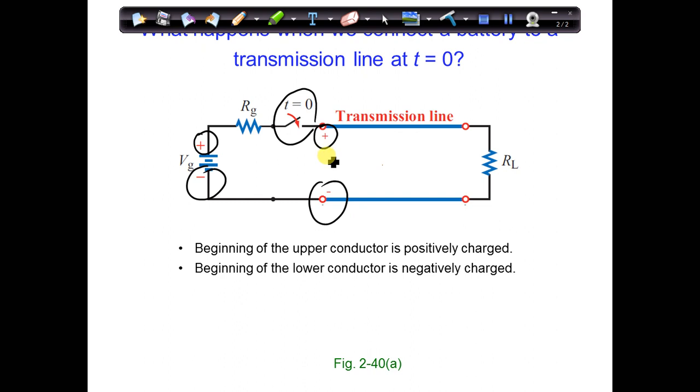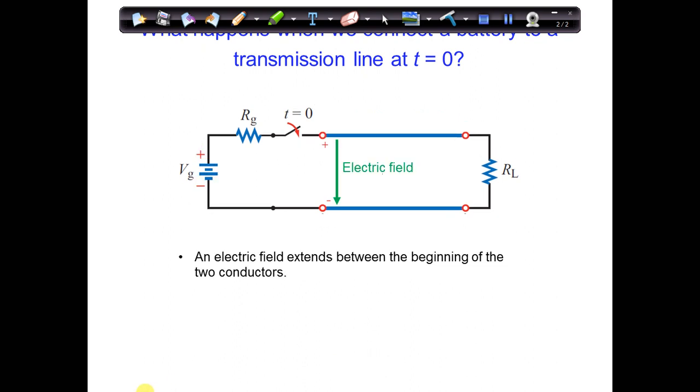What happens when we have separation of charge? Think of a capacitor where we have separation of positive and negative charges on the different plates of the capacitor. What extends between the two plates of charges? An electric field.